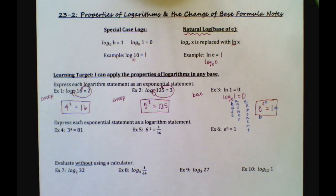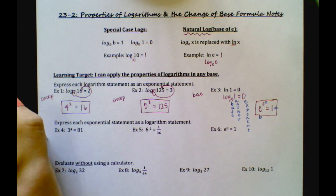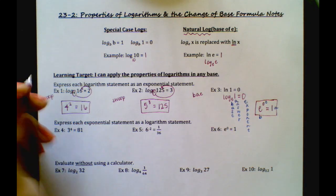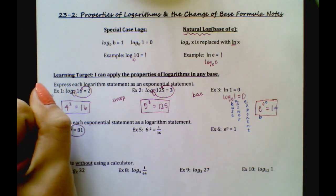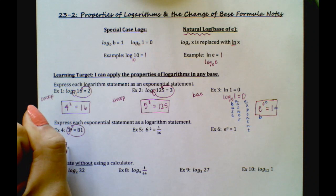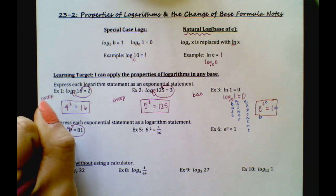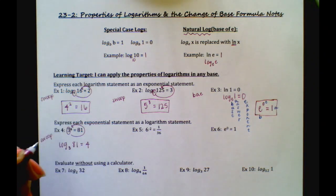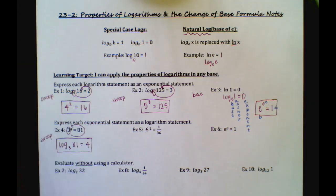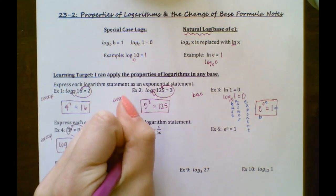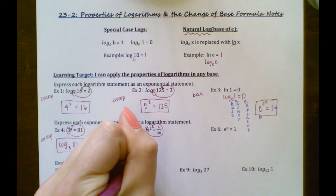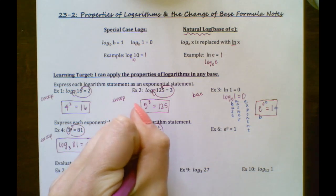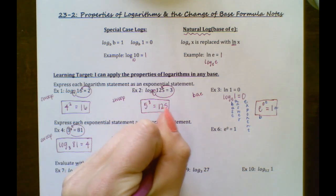Down in examples 4 through 6, it says express each exponential statement as a logarithm statement. I'm going to use the swoop method. Take the first number, swoop it around — and remember, you always have to write log first. So: log base 3 of 81 equals 4. Then, using the swoop method on example 5, circle the first number and swoop around: log base 6 of 1 over 36 equals negative 2.